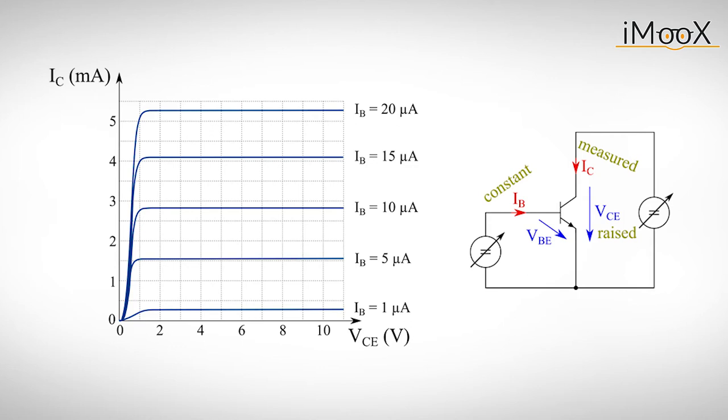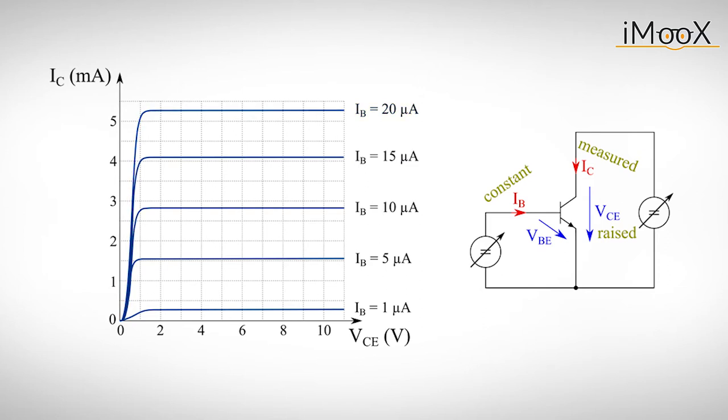The diagram only shows the characteristic of five different base currents. But in reality, there are infinitely many values for IB, which would result in infinitely many curves, which again would not make much sense to draw into one diagram.